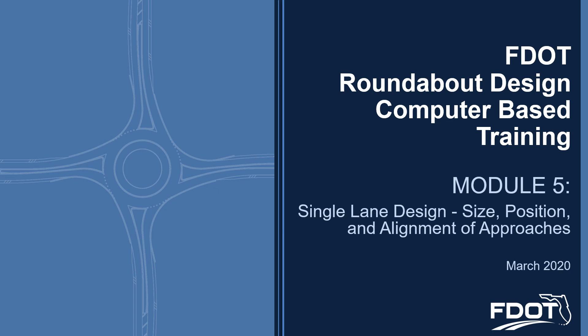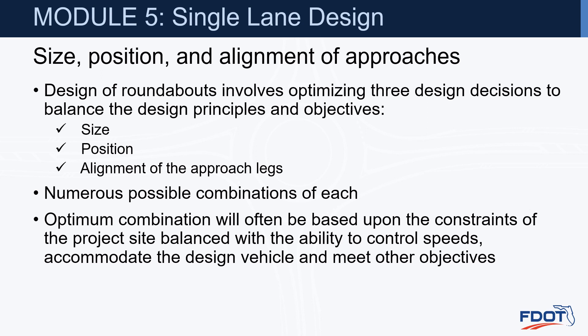Module 5, Single Lane Design. We're going to talk about the size, position, and alignment of approaches. Design of roundabouts involves optimizing three design decisions to balance the design principles and objectives, and they include the roundabout size, its position, and the alignment of the approach legs.